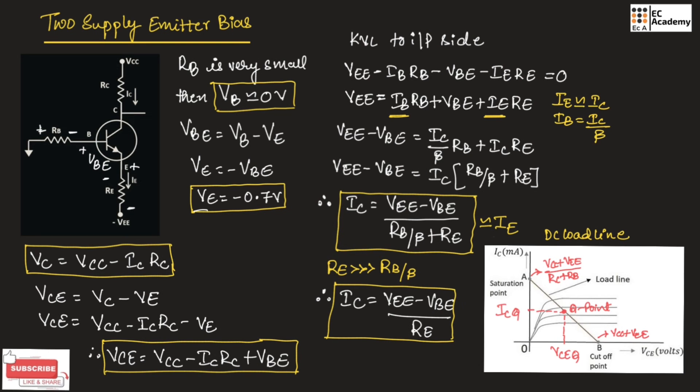This is about two-supply emitter bias. Hope you have understood the topic. Thank you.